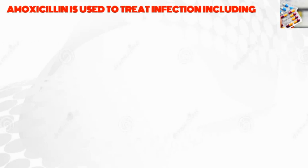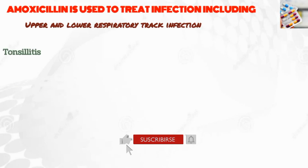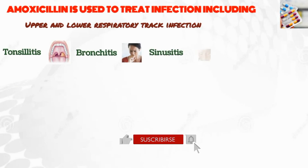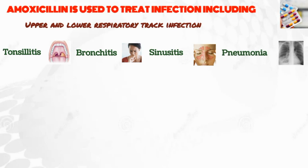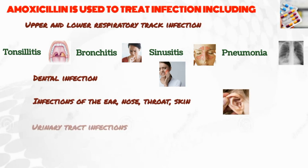Amoxicillin is used to treat infections including upper and lower respiratory tract infections such as tonsillitis, bronchitis, sinusitis, and pneumonia. It also treats dental infections, and infections of the ear, nose, throat, and skin, as well as urinary tract infections.